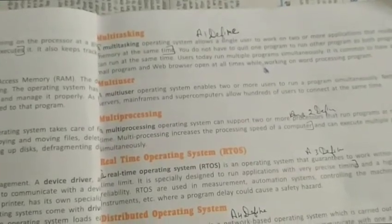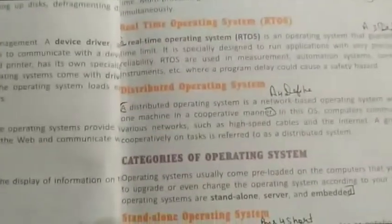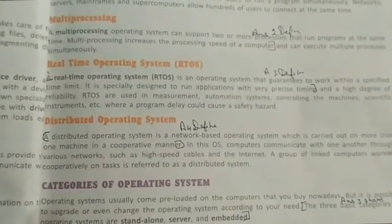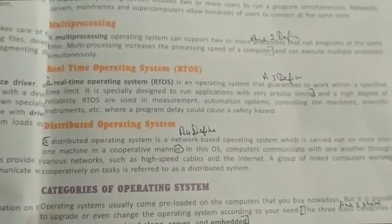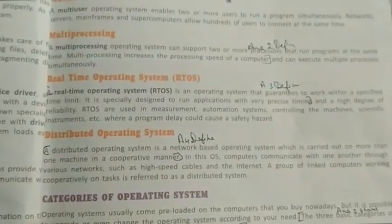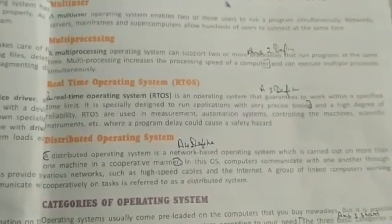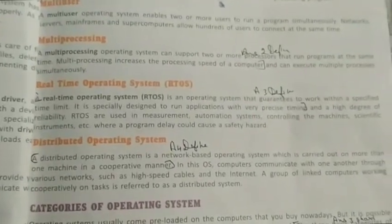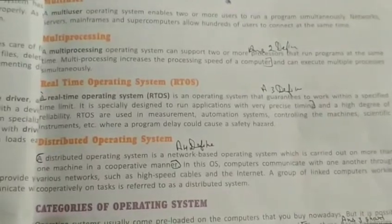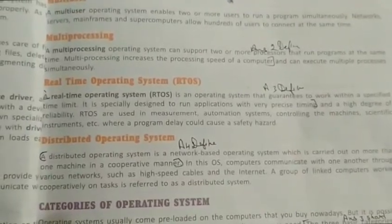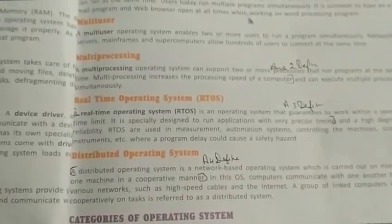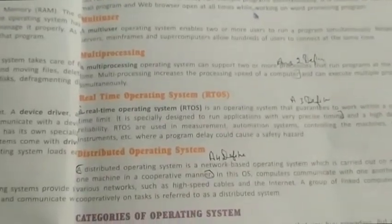Next we have distributed operating system. A distributed operating system is a network operating system carried out on more than one machine in a cooperative manner. A group of linked computers working cooperatively on one task is referred to as a distributed operating system. The best example is a server giving services to all connected computers. Thanks — we'll discuss the categories of operating systems in the next video. Have a nice day.